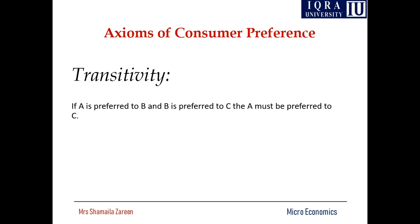The property that indifference curves cannot cross with each other depends on transitivity. If A is preferred to B and B is preferred to C, then A must be preferred to C. For example, with three consumption bundles — tea, coffee, and drink — if tea is preferred over coffee and coffee is preferred over drink, then tea must be preferred over drink. The transitivity condition can also be written as: if A is indifferent to B and B is indifferent to C, then A must be indifferent to C — if A equals B and B equals C, then A equals C.